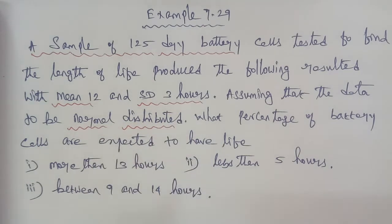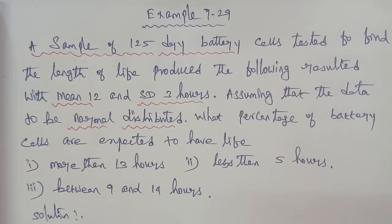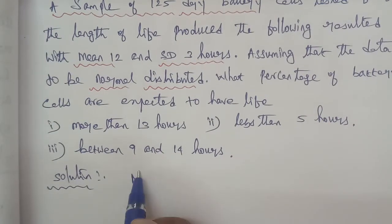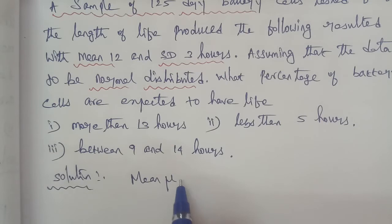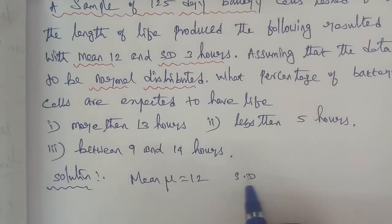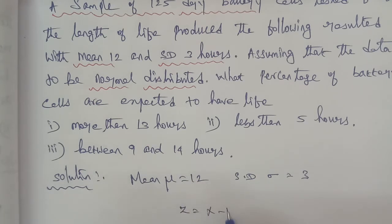Given: mean μ is equal to 12, and standard deviation σ is equal to 3. The normal distribution formula is Z = (X − μ) / σ.